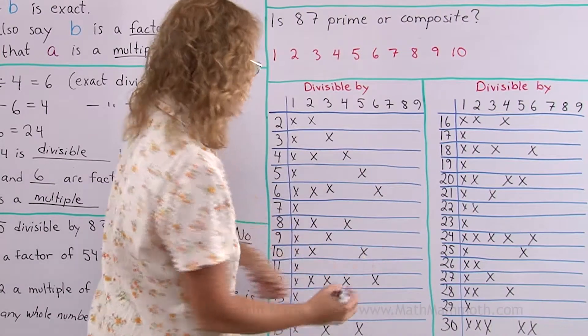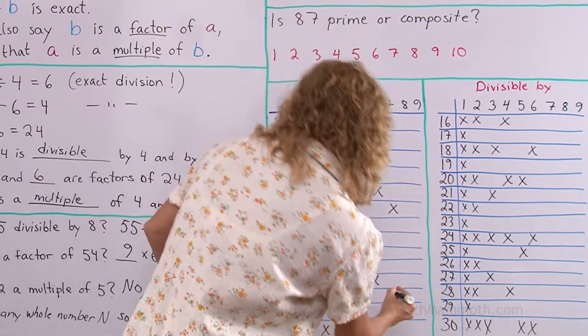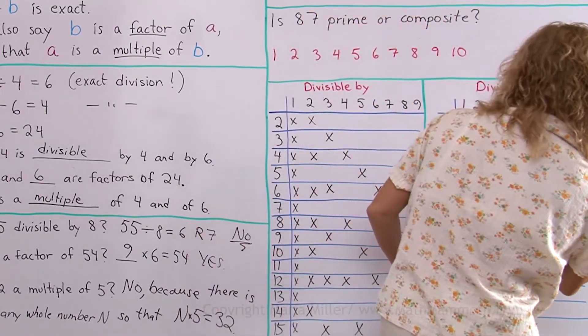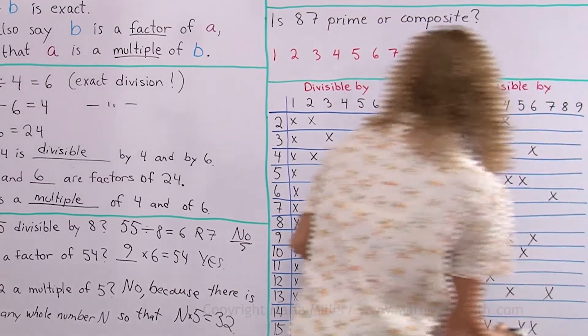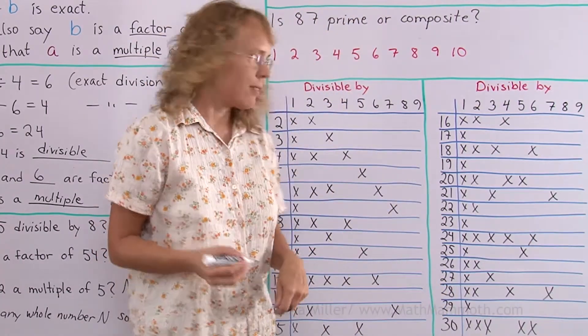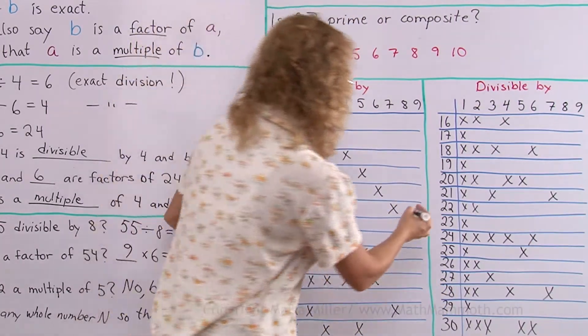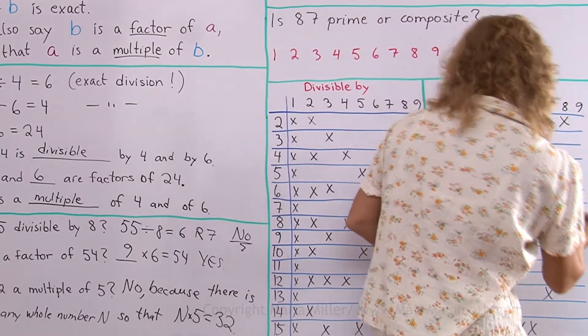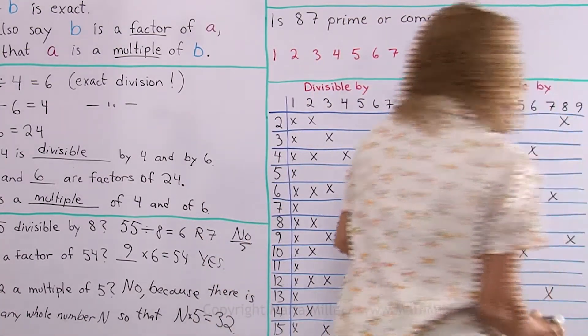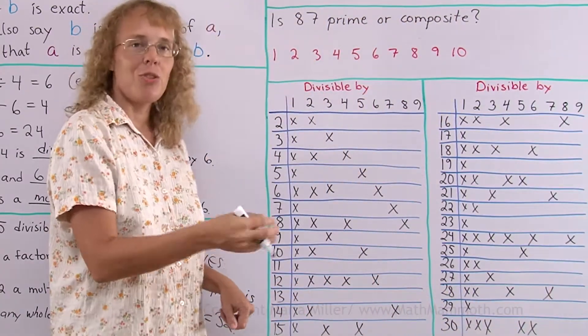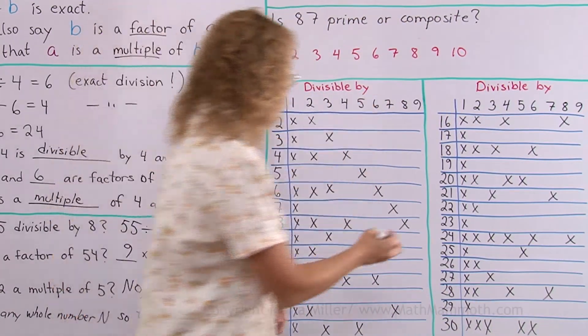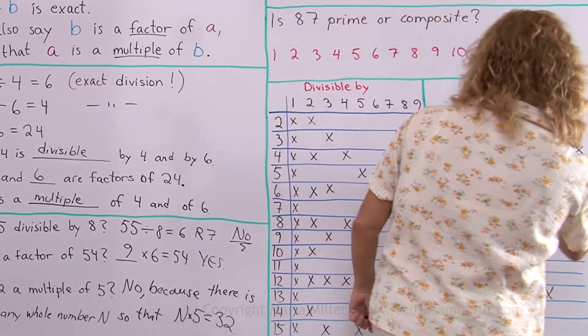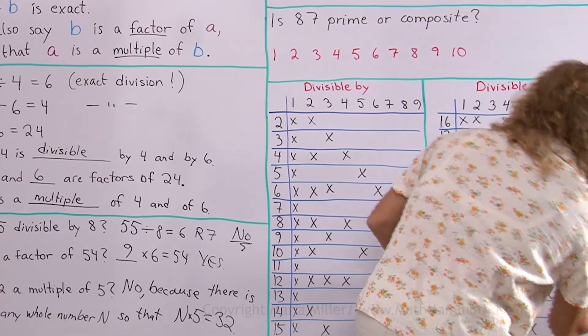Then by 7, we would have 7, of course, divisible by 7, and then the next one is 14. And over here, 21 and 28. Divisible by 8, we have 8 is divisible by 8, and then 16 and 24 and that's it. Of course, 32 and so on, but not in this chart. Divisible by 9, we have 9 divisible by 9, and then 18, and then 27, every ninth number.